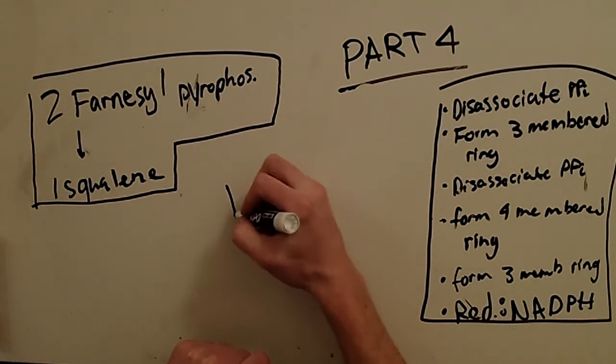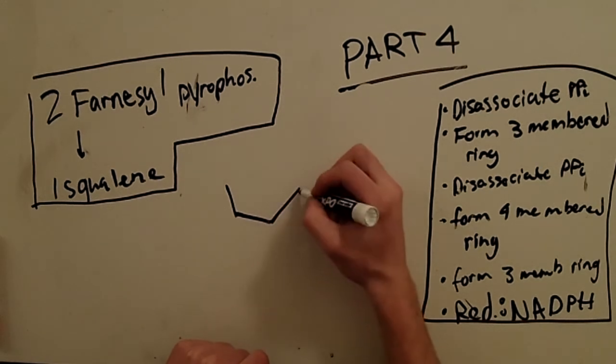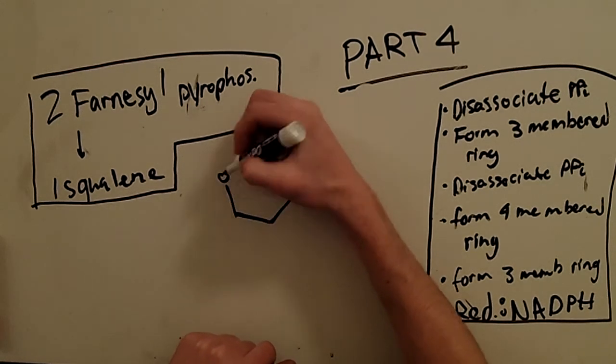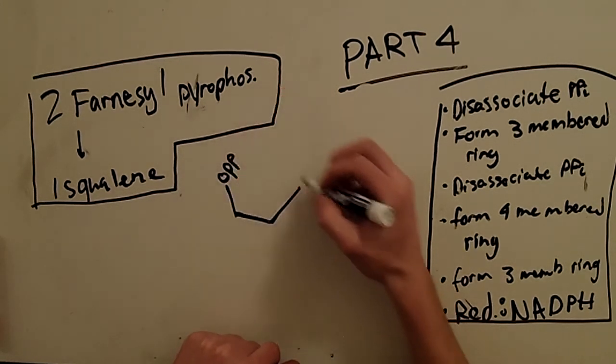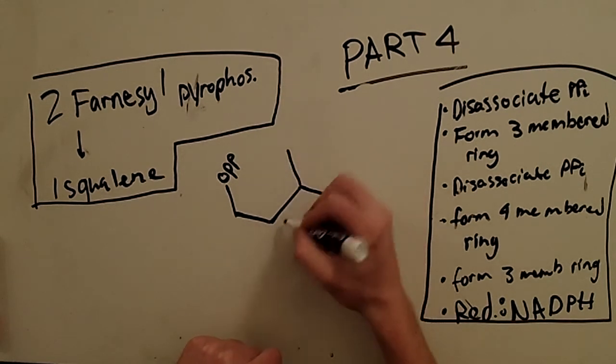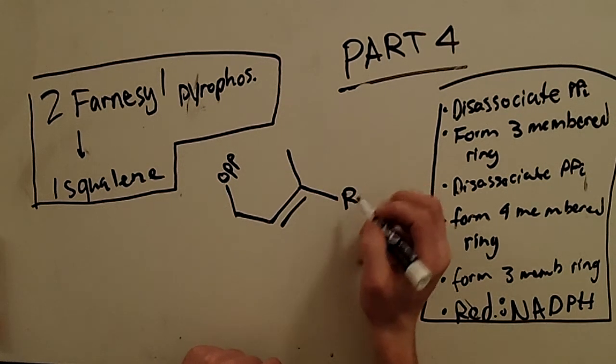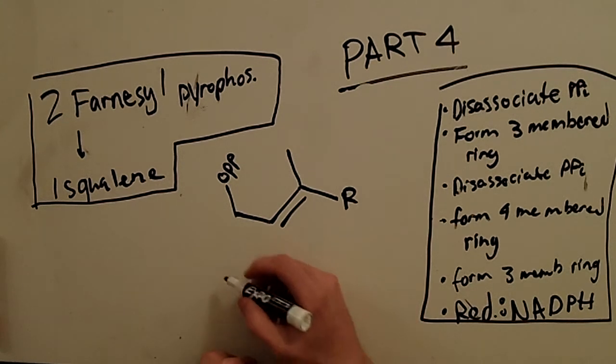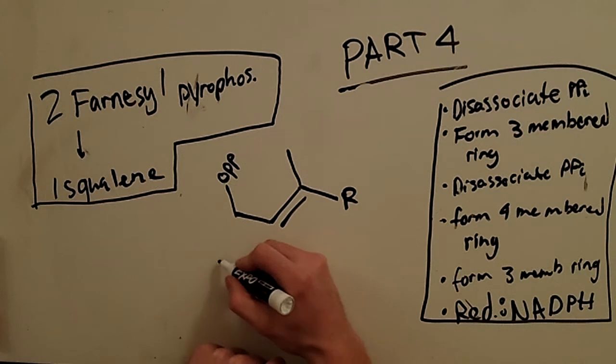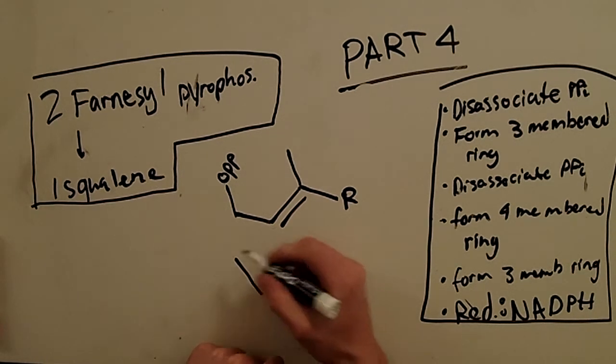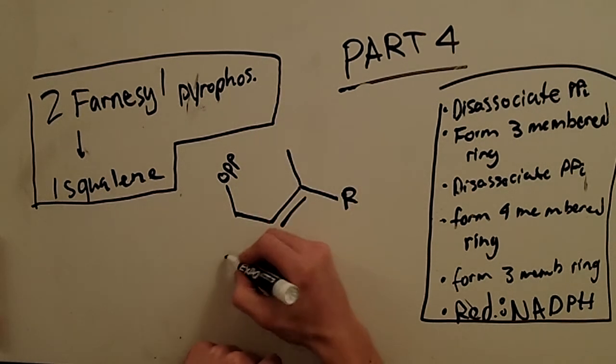So, let's look at the farnesyl pyrophosphates that we formed at the end of part 3, like this. That's farnesyl pyrophosphate. I'm going to shorthand it and say there's an R group there. We know what that is. So, and then we have another one, two farnesyl pyrophosphates, so OPP.